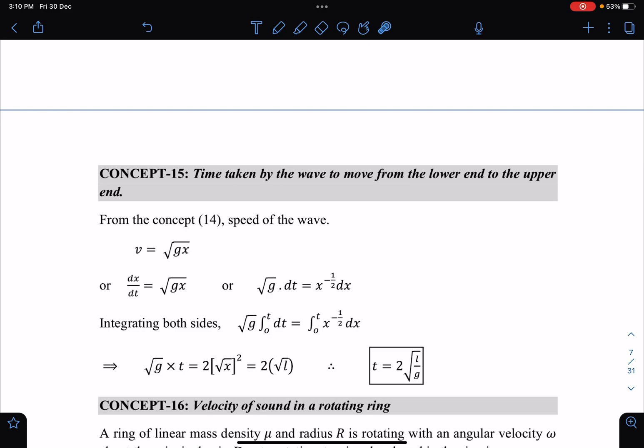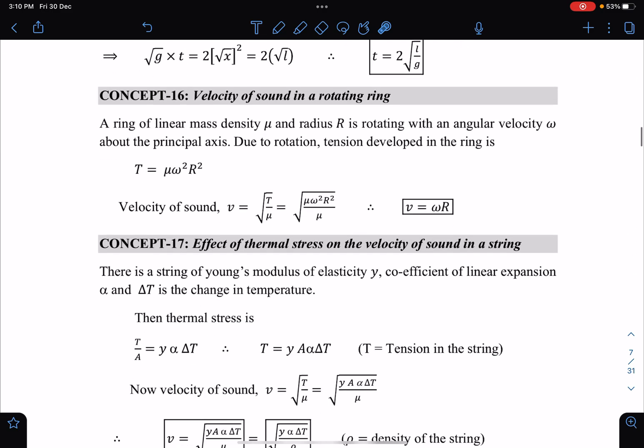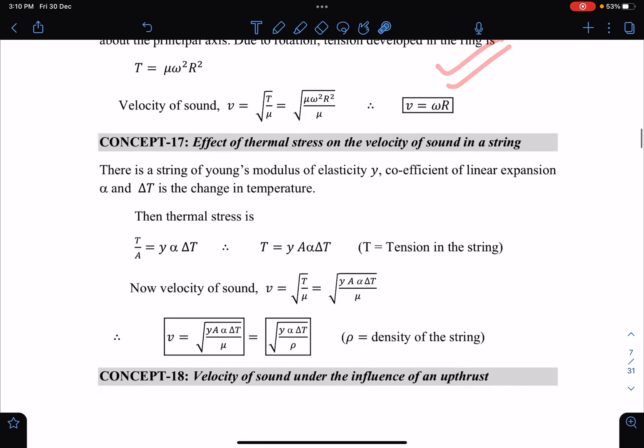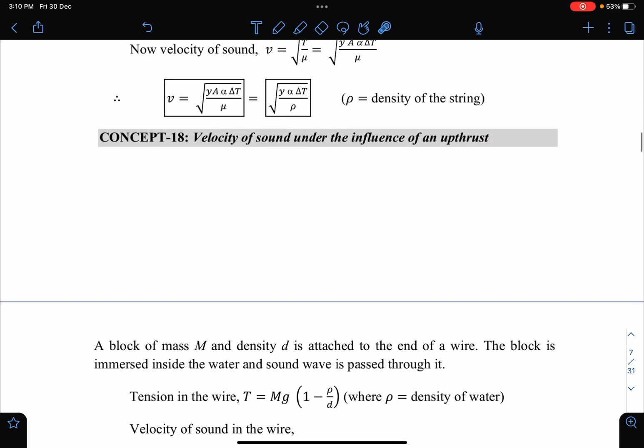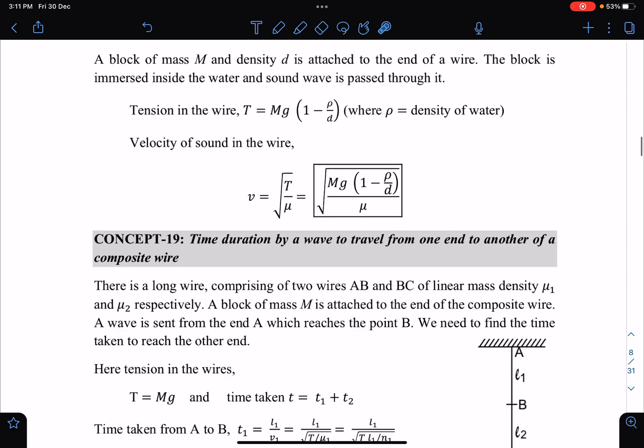This is part two, continuation of previous video. Time taken, velocity of sound in rotating string how to write, and effect of thermal stress - Y alpha delta theta by mu you can write. So of course under root will come. This is velocity of sound in the influence of thrust, similar to buoyancy.